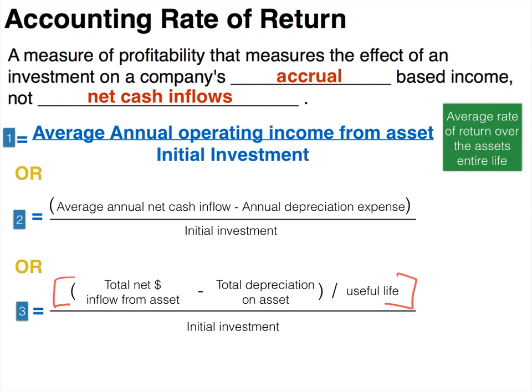Before moving on, let's briefly discuss total depreciation on the asset. If we depreciate an asset, the total depreciation will be the cost of the asset unless there's a residual value — we don't depreciate an asset below its residual value. So total depreciation equals cost minus residual value. If the problem doesn't mention residual value, assume it's zero and total depreciation equals the cost.